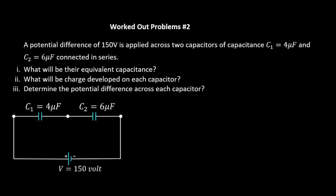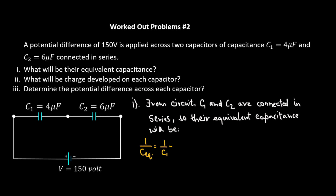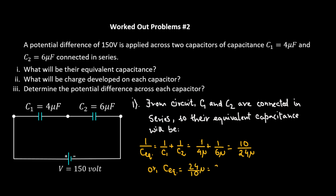Problem number two: A potential difference of 150 volts is supplied across two capacitors C1 equals 4 microfarad and C2 equals 6 microfarad connected in series. What will be their equivalent capacitance? Since C1 and C2 are in series, 1 over C_equivalent equals 1 over C1 plus 1 over C2. Substituting values: 1 over 4 microfarad plus 1 over 6 microfarad gives 10 over 24 microfarad, so C_equivalent equals 24 over 10 microfarad, or 2.4 microfarad.